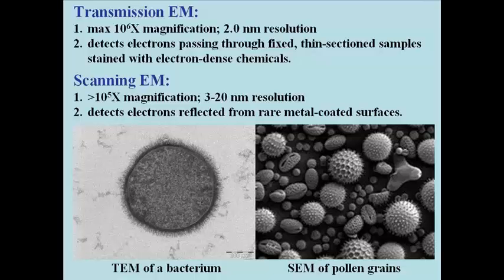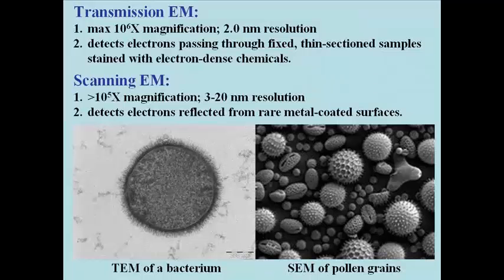In the transmission electron microscopy, or TEM image on the left of a bacterium, a beam of electrons has passed through a fixed, and therefore non-living specimen, that has been treated or stained with an electron-dense dye — meaning a dye through which electrons do not pass. The parts of the cell that picked up the dye appear dark. This TEM of a bacterial cell shows the paucity of internal cell structures. Do note the fine hairs, or pili, that coat the surface of the cell; these help the bacterium recognize certain environmental chemicals or other cells.